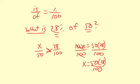I can do this mentally. I know 50 and 100 reduces to one half, so that's the same thing as 1 over 2 and then the 28. So 1 half times 28, that's 14. So x equals 14. That means 28% of 50 is 14.